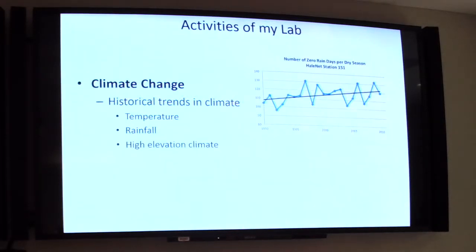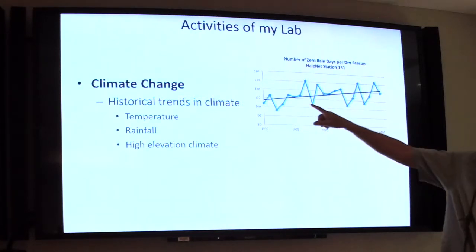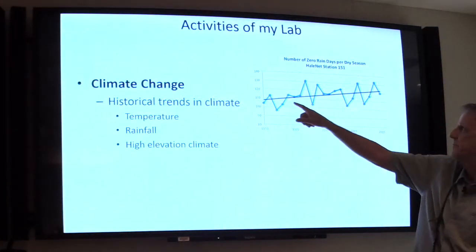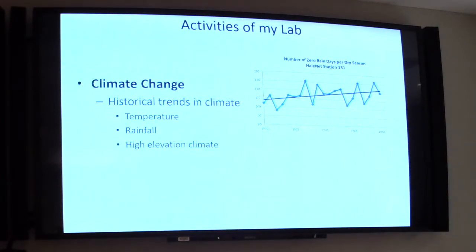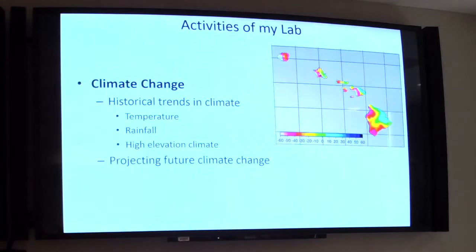We looked at how rainfall changes — mostly the work of Abby Frazier, using gridded rainfall over nearly 100 years. She took time series from every pixel on those maps, did trend analysis, and showed the spatial patterns of those trends. The yellows and reds show places where rainfall has decreased; the hatched areas are where changes are statistically significant. Almost all significant changes show decreases in rainfall. We've also done a lot of work on high elevation climate, which is where we still have intact native ecosystems and where we derive much of our water resources.